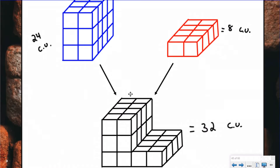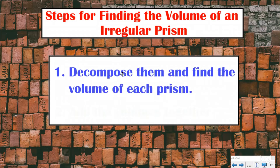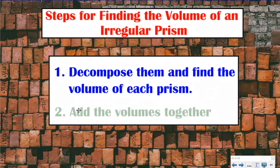So that's what we mean by additive. This combined prism is called an irregular prism. An irregular prism is made up of two or more rectangular prisms — it's kind of odd looking. The steps to find the volume are: first, decompose — break the prism apart and find the volume of each piece. Then add the volumes together. That's the two steps, pretty simple.